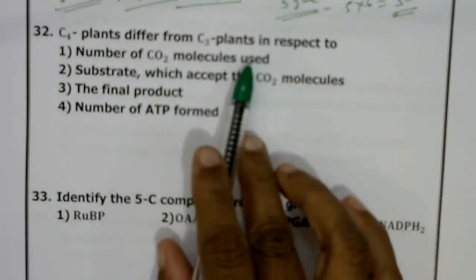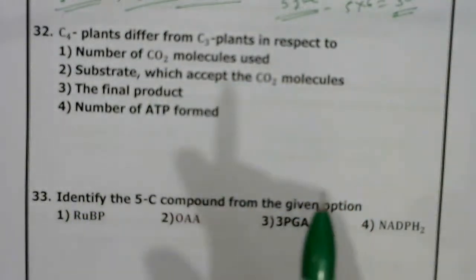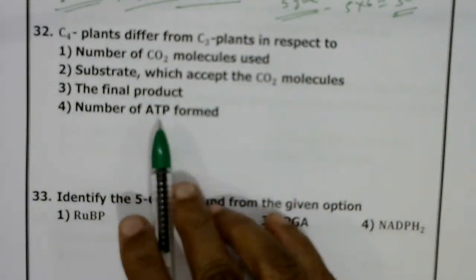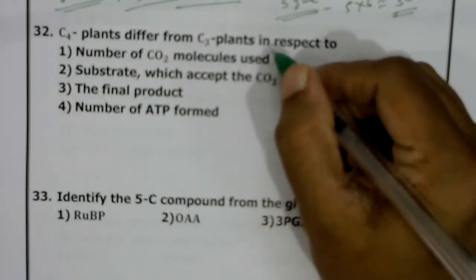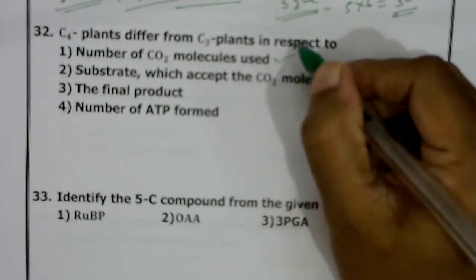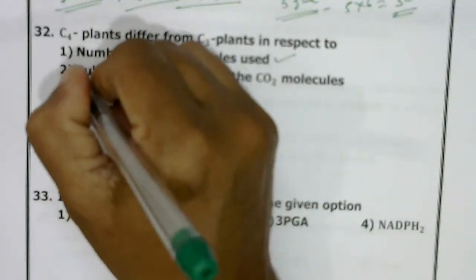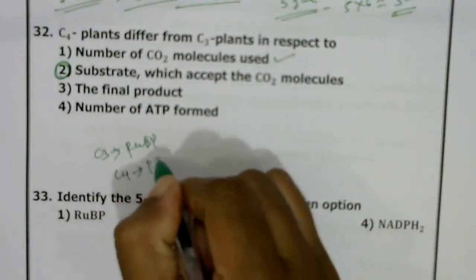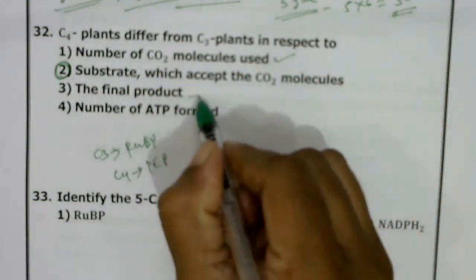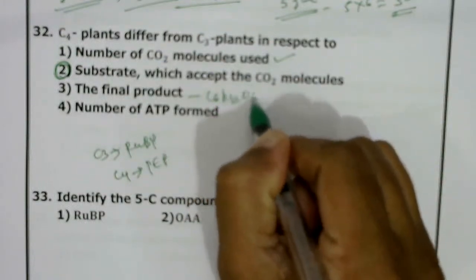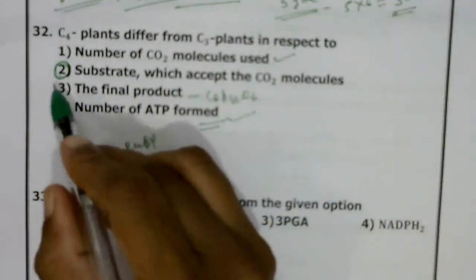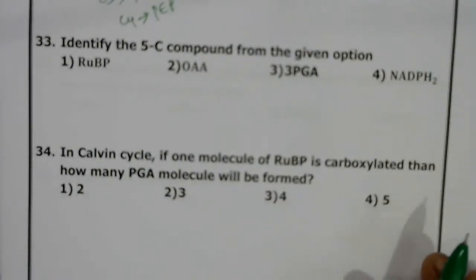C4 plants differ from C3 plants in respect to: number of CO2 molecules used, substrate accepting CO2, the final product, or number of ATP formed? The same number of CO2 molecules are used and same ATP is formed. The final product in both is C6H12O6. The main difference is the substrate accepting CO2: in C3 it is RUBP; in C4 it is PEP (phosphoenolpyruvate). Correct answer: second option.